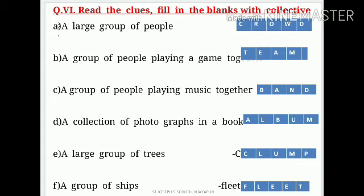D: a collection of photographs in a book — where we collect photographs is an album. Five-letter word: album. E: a large group of trees — we call it clumps. F: a large group of ships — not sheep, but ships, big boats. A group of ships we call a fleet. Collective noun is fleet.